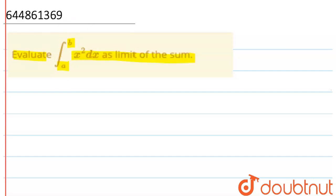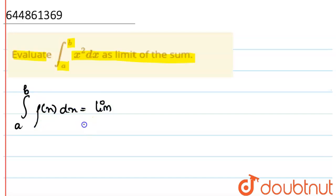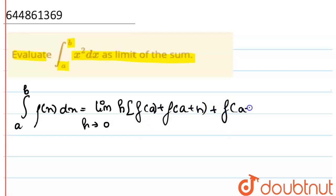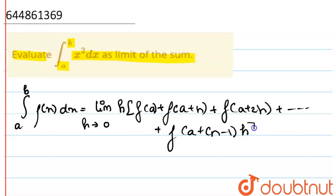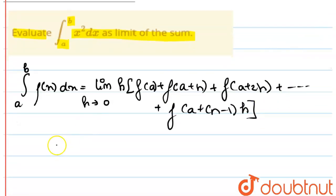Evaluate the integration from a to b of x squared dx as the limit of a sum. The definition of limit of sum is: the integral from a to b of f(x) dx equals the limit as h tends to 0 of h multiplied by f(a) plus f(a+h) plus f(a+2h), going on till f(a + (n-1)h), where b minus a equals n times h.